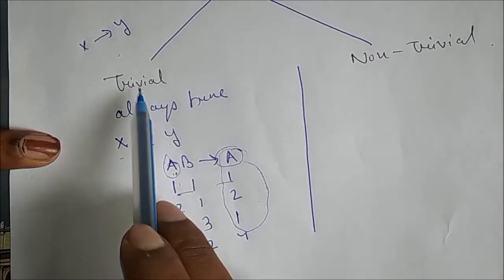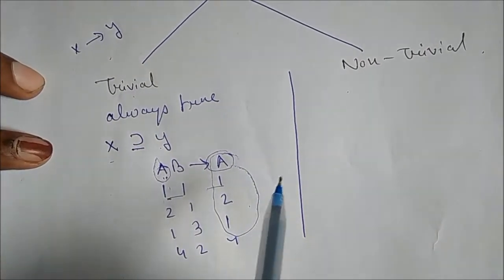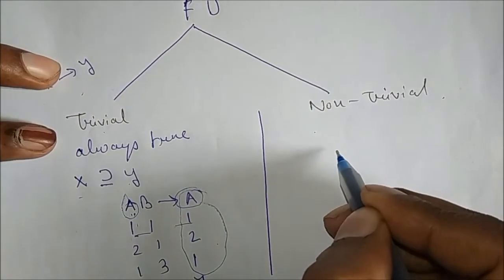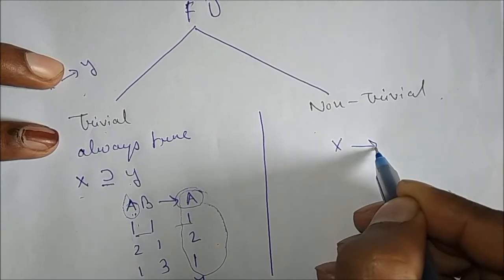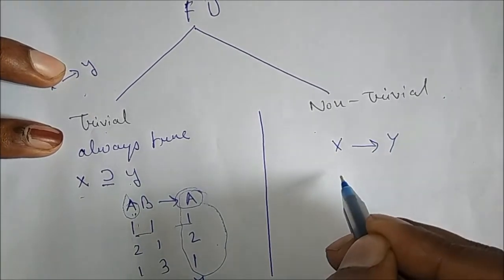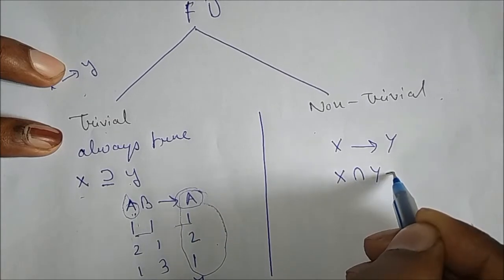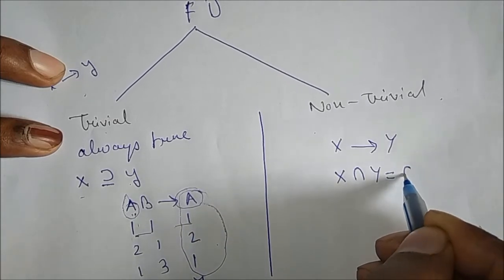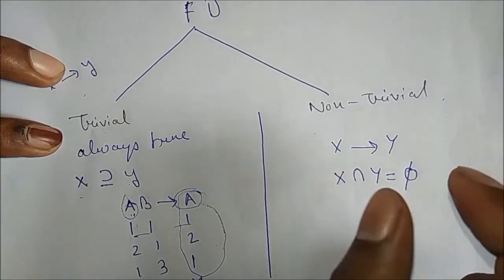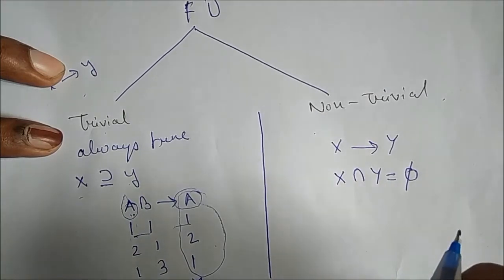Non-trivial means: if X is a Functional Dependency on Y, then X intersection Y should be equal to Phi. It should be Phi — then it is a non-trivial Functional Dependency.